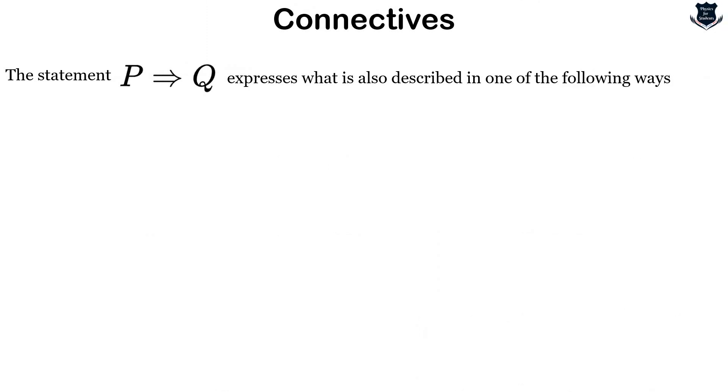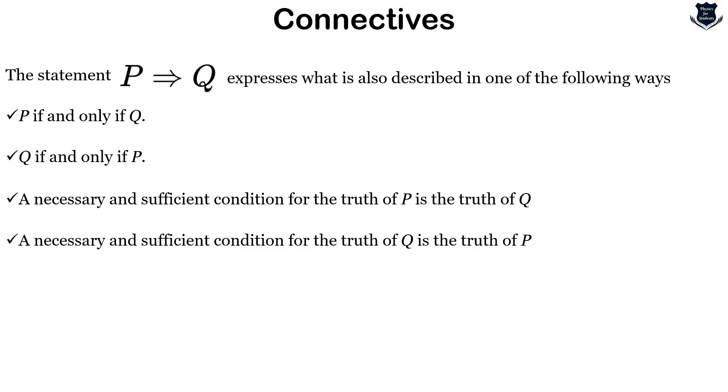The statement 'p if and only if q' expresses the following: p if and only if q, q if and only if p, a necessary and sufficient condition for the truth of p is the truth of q, a necessary and sufficient condition for the truth of q is the truth of p, and p and q are equivalent statements.